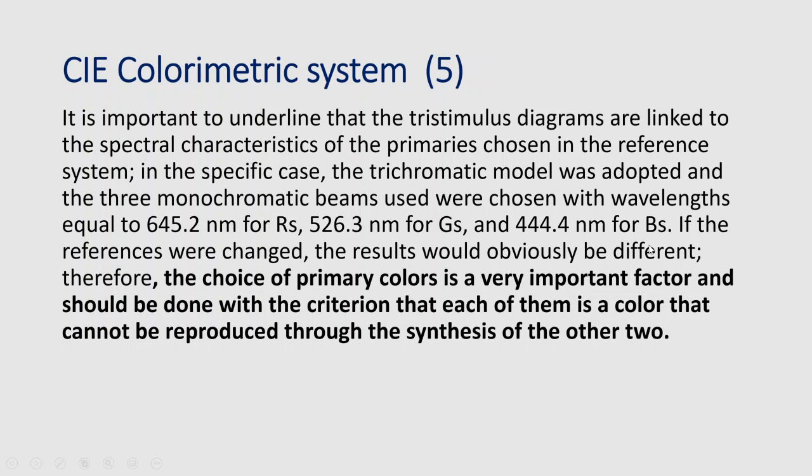The choice of primary colors is a very important factor and should be done with the criterion that each of them is a color that cannot be reproduced through the synthesis of the other two. I can use whatever colors I want as primary colors — even red, blue, and brown — and reproduce an infinite quantity of colors. But the rule is that the primary colors should not be reproducible through the synthesis of the other two. Using these three primary colors, I cannot reproduce blue by mixing only red and green.